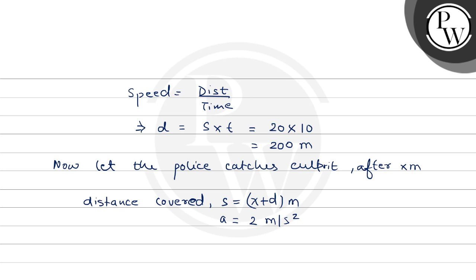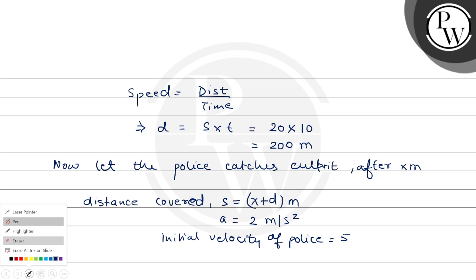How much was the initial velocity of police? The velocity of police is 108 kilometer per hour. We will convert this to meter per second. Again, we will multiply it with 5 divided by 18.